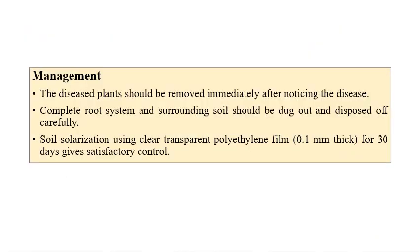For management of Fusarium wilt, if diseased plants are identified, it is better to remove them immediately. If you find visually wilted infected plants, especially in the root region, you can completely dig out the soil and expose it to sunlight carefully. We can also use soil solarization with a clear polythene film of 0.1mm thickness for 30 days, which gives satisfactory results, as soil solarization is especially effective for soil-borne diseases.